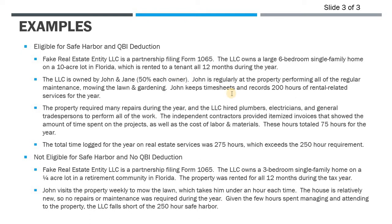John keeps timesheets of what he does throughout the year, and his total hours are 200. He has weekly timesheets showing when he arrives at the property, all the work he does, and how long he's there. The property also required a lot of repairs — it's an older home — so the LLC hired electricians, plumbers, and general contractors. John and Jane kept all invoices and logs showing how much time those contractors spent, totaling 75 hours of maintenance for the year.